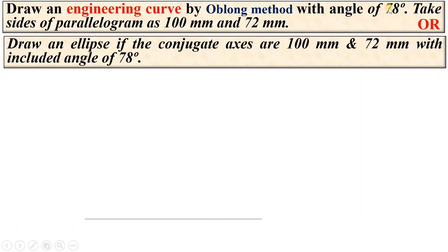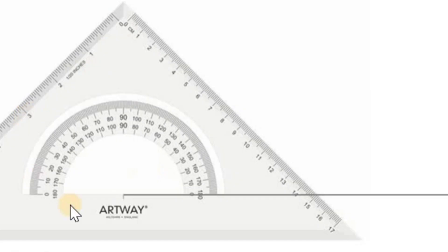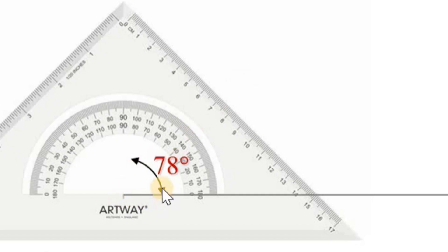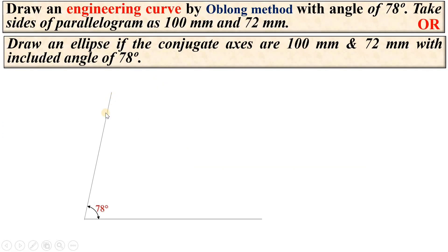The next angle given for the parallelogram is 78 degrees. With the help of the protractor, take the angle as 78 degrees with reference to this line — 70, then 80, so here it is 78. Now draw the line. This is the other side of the parallelogram, which is given to you as 72 mm.